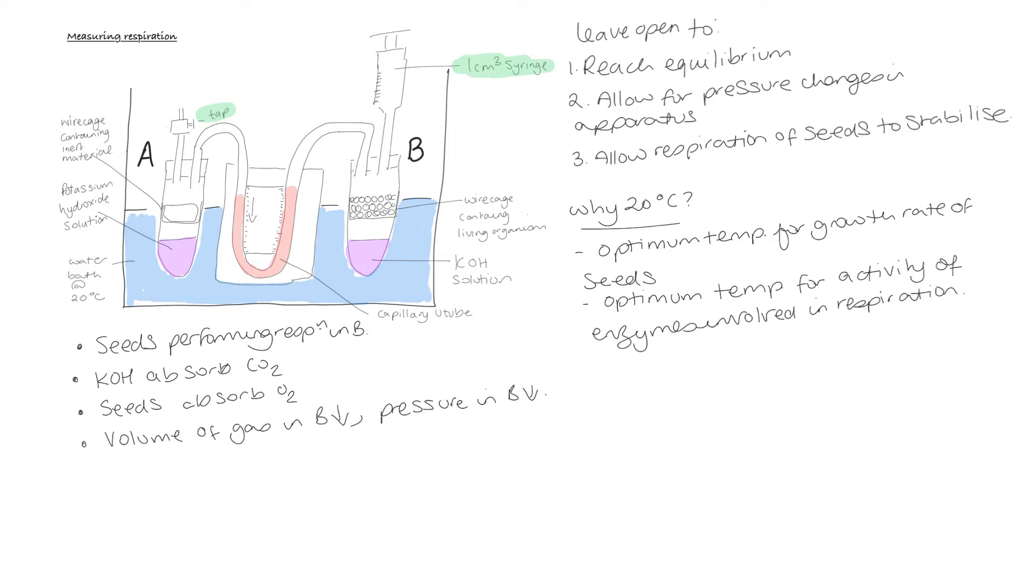An alternative way of doing it is at set intervals, for instance, every minute. You could move the plunger on the syringe so that the red liquid goes to where it was originally. So you would add air into the chamber. As you do this, you can record how much air was needed to be added to tube B to bring the red liquid back to where it was originally. And you can use that as your measurement for how much gas had been removed from the system.